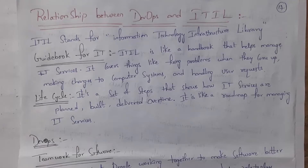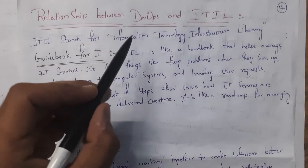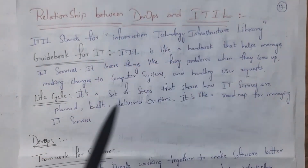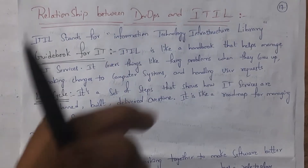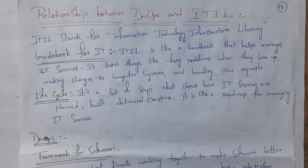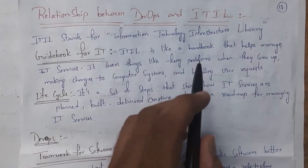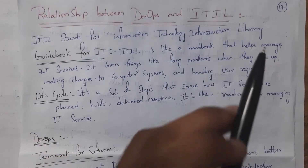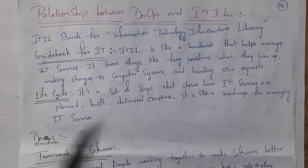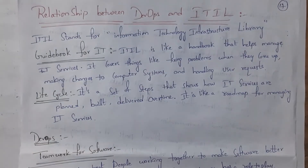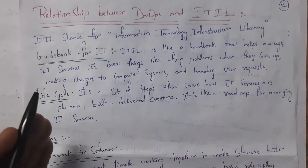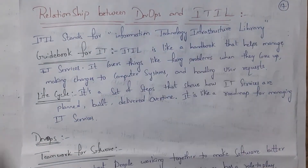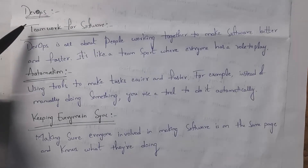ITIL stands for Information Technology Infrastructure Library. ITIL is essentially a guidebook — a handbook — by following which we can manage IT services. This handbook covers things like fixing problems when they come up, making changes to computer systems, and handling user requests. The ITIL lifecycle contains a set of steps that shows how IT services are planned, built, and delivered over time. Overall, ITIL is like a roadmap for managing IT services.